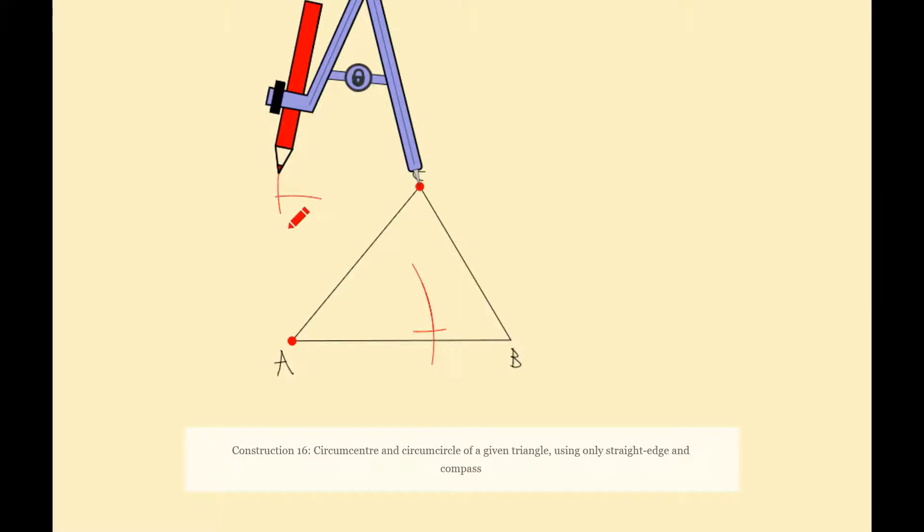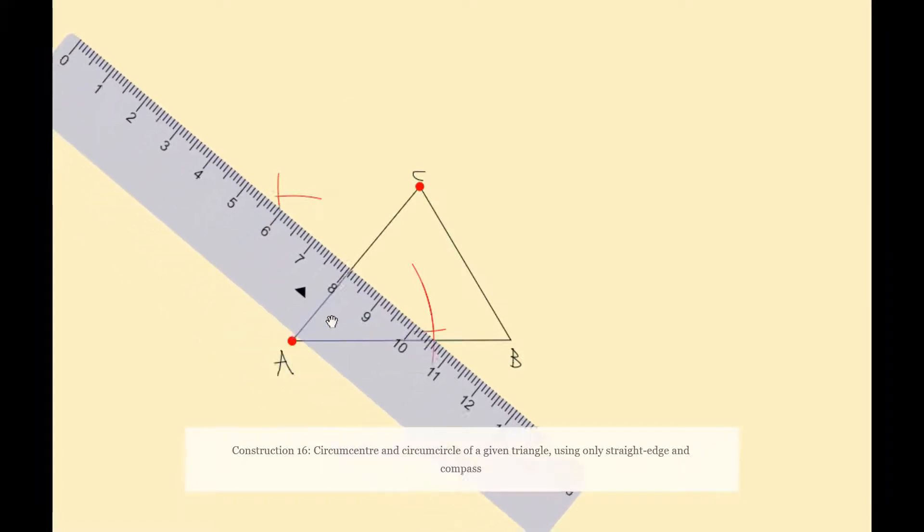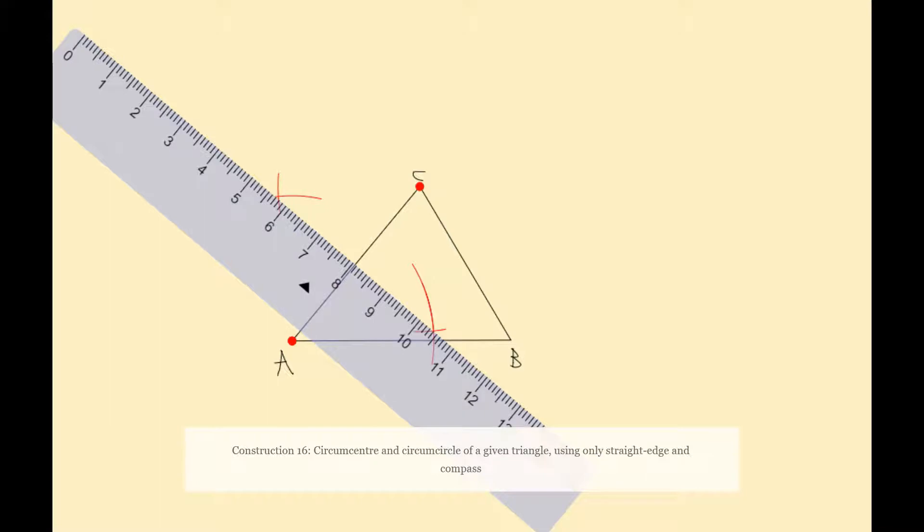Next thing I'm going to do is construct a bisector of the line AC by drawing a line now between these two arcs. So with my ruler and my pencil, I'm sliding my ruler up to my arcs and I'm going to connect with my pencil now like that. Okay so that's my first perpendicular bisector and again that's just bisecting the line AC in half.